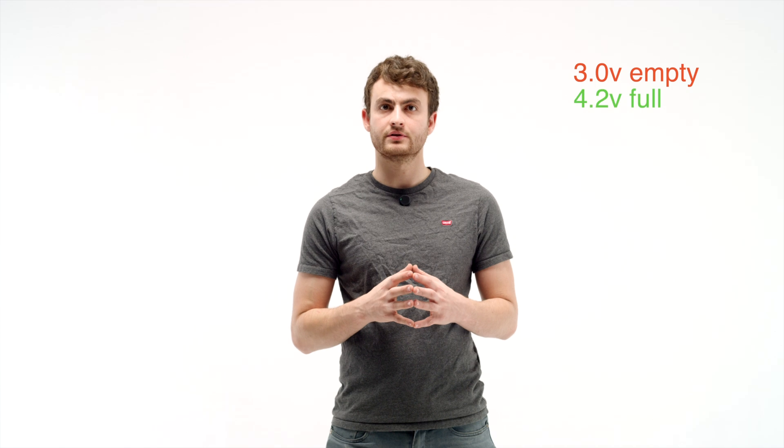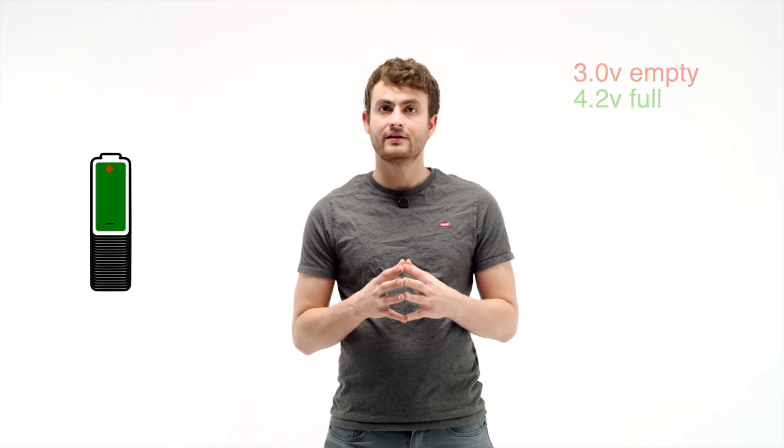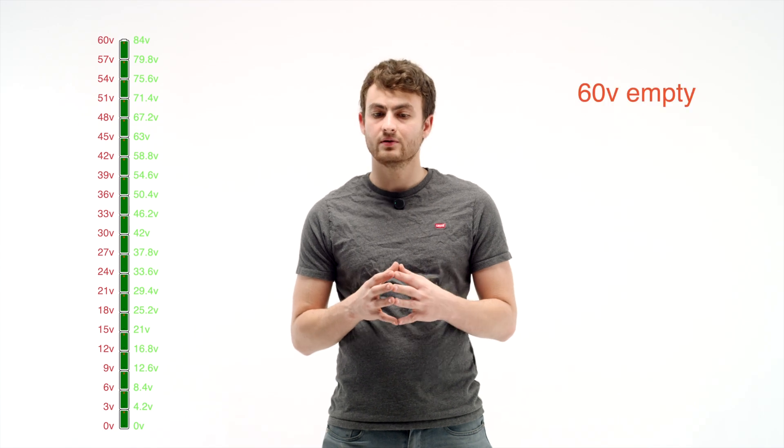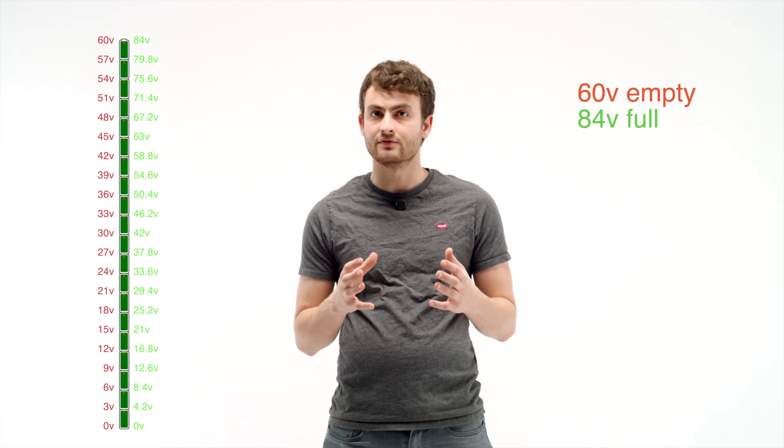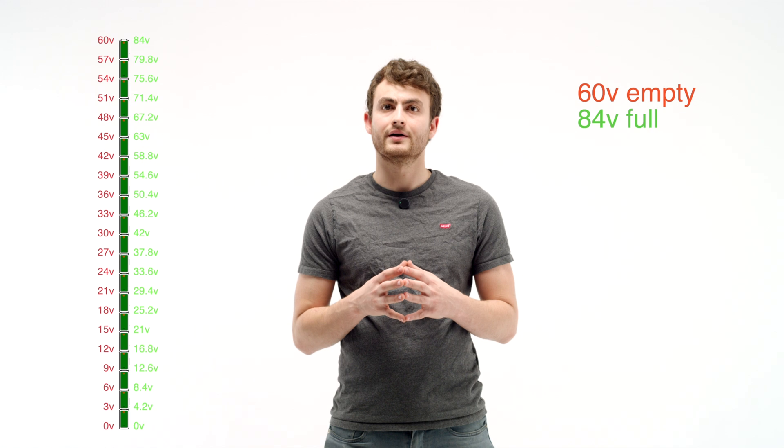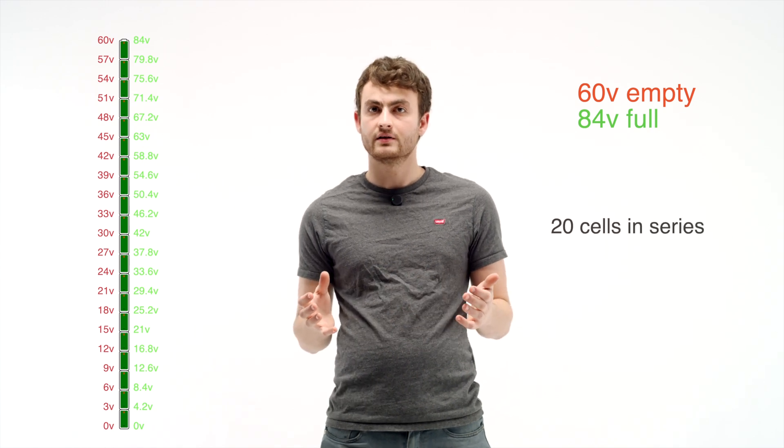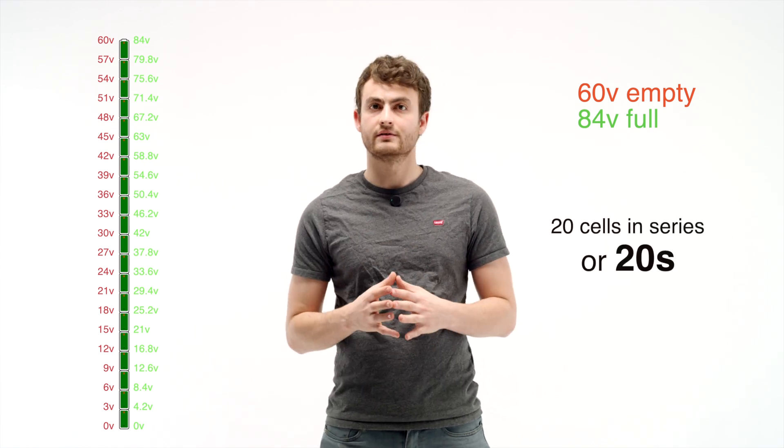Now if you'll recall I said that a typical lithium cell has an empty voltage of around 3 volts and a full voltage of around 4.2 volts. Let's say you connect 20 of them in series, now you've got an empty voltage of around 60 volts and a full voltage of around 84 volts. That's a lot better for an e-bike. By connecting 20 of these cells in series we get a 20s battery like this one here.